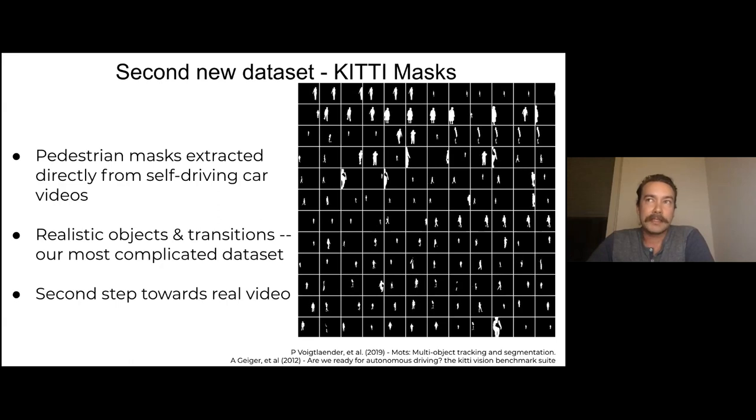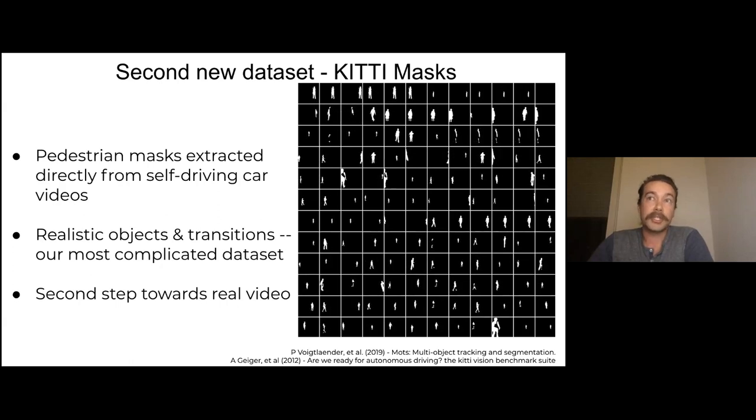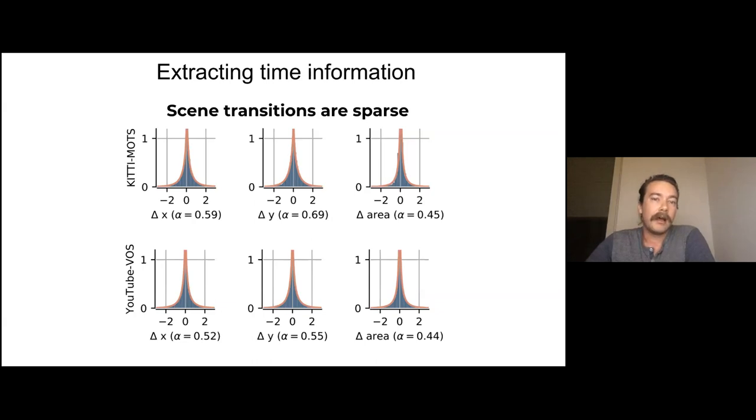So this is a further step closer towards real video. The downside of this compared to natural sprites is that with natural sprites, we have all of the parameters for generating the video. We know exactly what parameters went into the generating model. Whereas here, we only have the position and area. We're just limited by what we can measure. So now that we have these datasets, we wanted to build a model that exploits the statistics of this data, or is constrained by the statistics of this data. So we measured those statistics. So these are looking at the time varying statistics. This is looking at transitions of these measurements from one frame to the next. And we found that the distributions are all sparse.